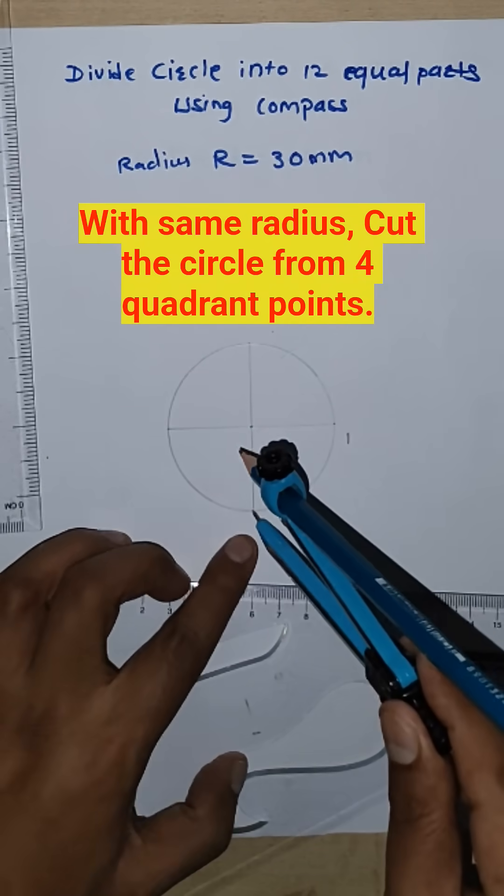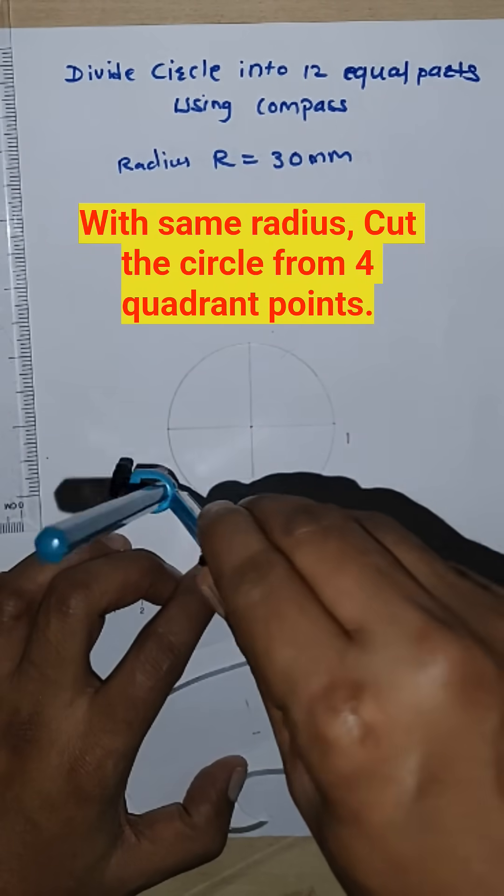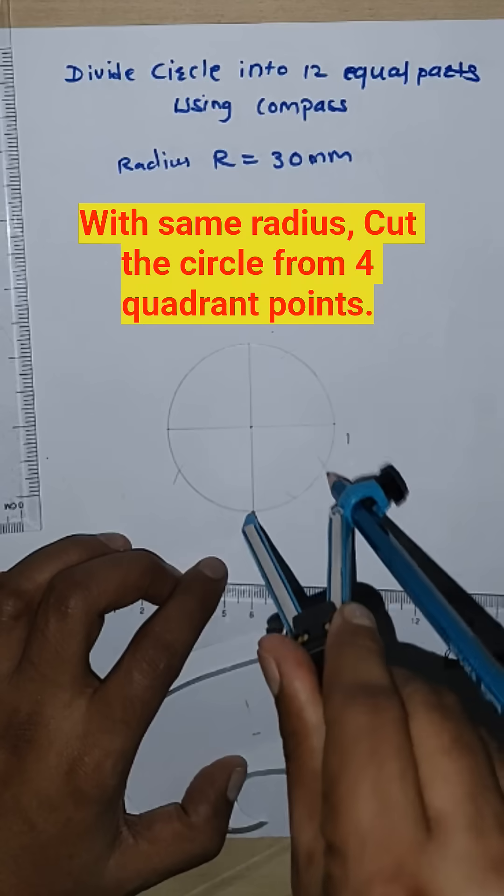Then from this point, this another quadrant point, cut this side and this side.